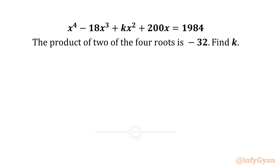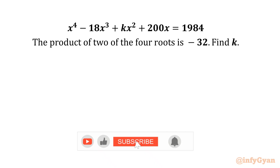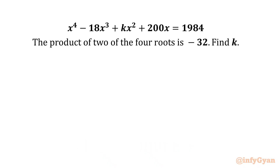Hello friends, welcome back to Infigyan. Today in this video we are going to solve another very interesting question from algebra. We have one quartic equation known and the product of 2 of the 4 roots is also known — it is minus 32. We have to find unknown k, which is the coefficient of x squared. So let's get started.